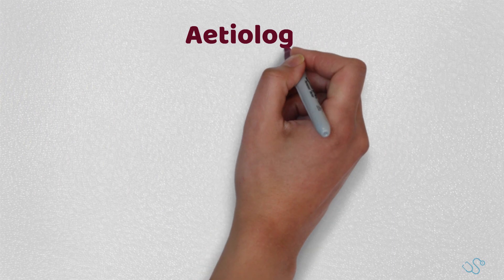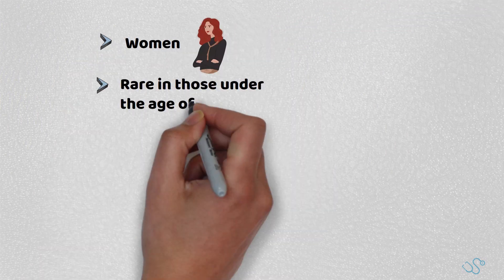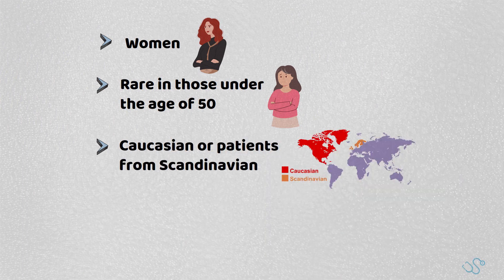It's relatively common, with certain studies suggesting that a full-time GP is likely to see a new case every one to two years. It's typically more common in women, and rare in those under the age of 50, with Caucasian or patients from Scandinavian countries seemingly more at risk.